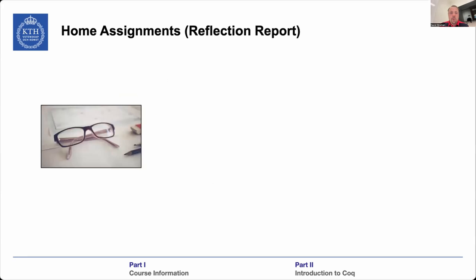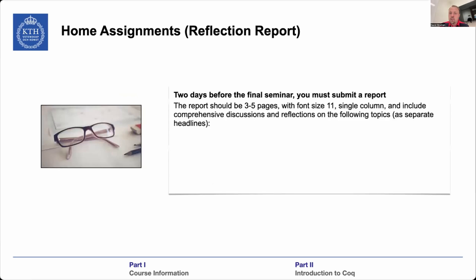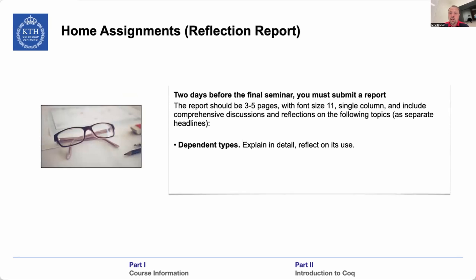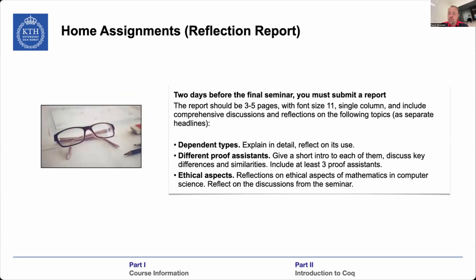There is also a reflective report, which you should submit two days before the seminar. I will post exact dates and submission guidelines later. It's a short report — three to five pages — covering the following: a discussion of dependent types and how they affect your way of proving or the use in different theorem provers; a comparison of at least three different proof assistants, which you'll be exposed to through the guest lectures and main course; and a discussion of ethical aspects, for which you'll receive reading materials.